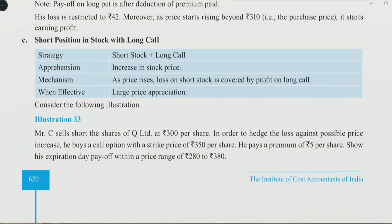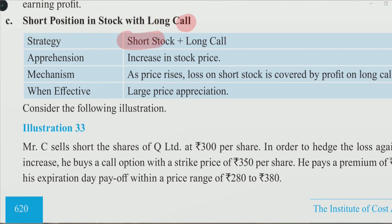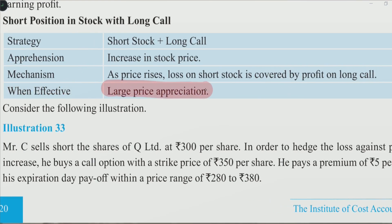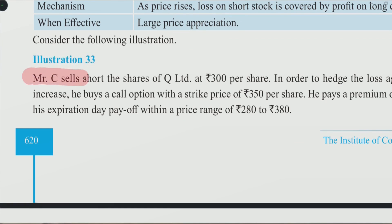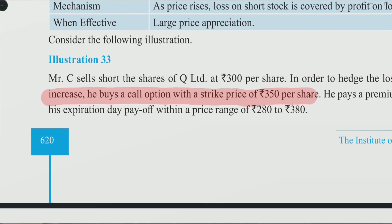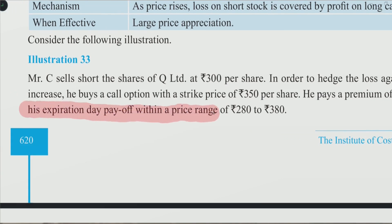The third strategy is short stock plus long call. Your apprehension here is a reversal — you are expecting an increase in the stock price. As the price rises, loss on the short stock is covered by the profit on the long call. This is effective when you are expecting a large price appreciation. Illustration 33: Mr. C sells short shares of Q Limited at rupees 300 per share. To hedge against a possible price increase he buys a call option with a strike price of 350, paying a premium of rupees 5 per share.